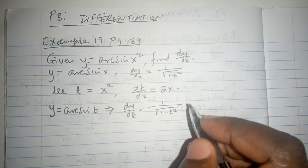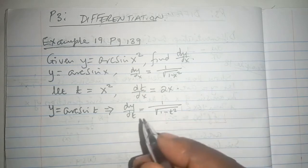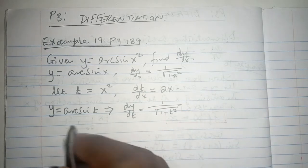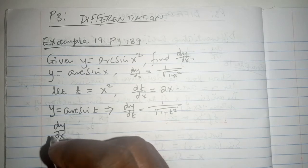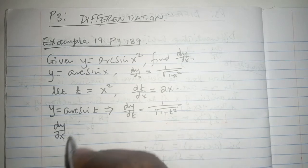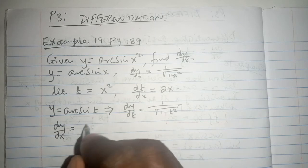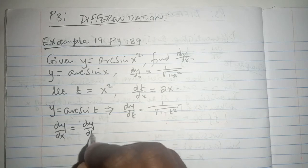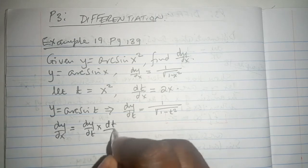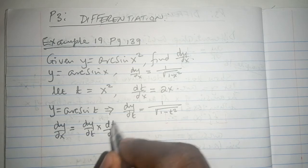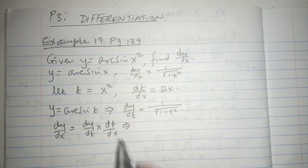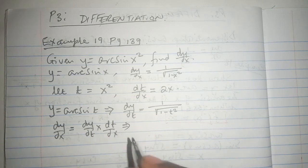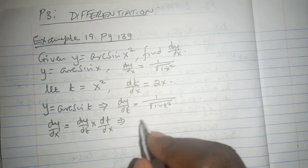But of course, we are looking for dy/dx, and at this particular point we must employ the chain rule because dy/dx is dy/dt times dt/dx, so that the dt and dt cancel out and you are left with dy/dx.